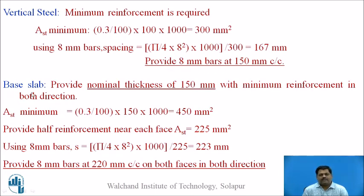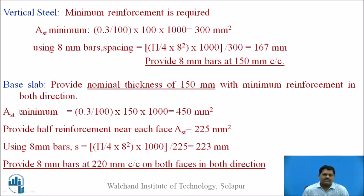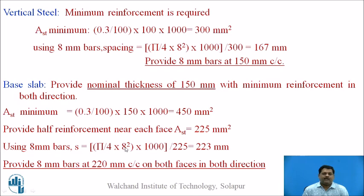The last design element is the base slab. Since the tank rests on ground, a bearing area is available. A 75 mm PCC layer is provided, and the base slab is cast on it. The base slab thickness is taken as 150 mm with minimum reinforcement in both directions. Minimum A_st for 150 mm thickness = 450 mm². This steel is provided on both faces (top and bottom), so half on each face = 225 mm². Using 8 mm bars, spacing = 223 mm. Provide 8 mm bars at 220 mm c/c on both faces in both directions.